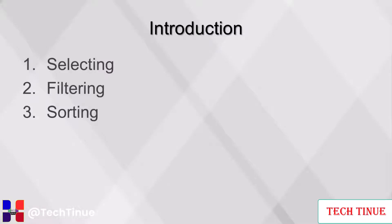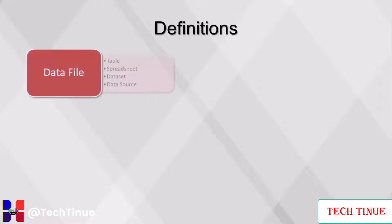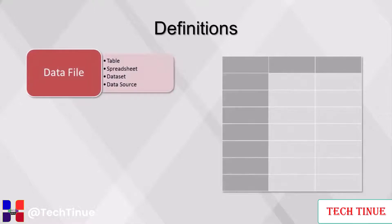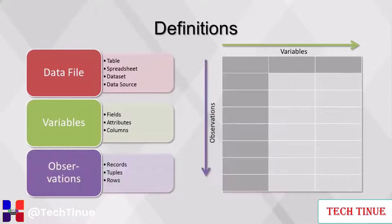This video will cover some of the foundations of business analytics — selecting, filtering, and sorting. There are many synonymous terms to describe the aspects of a typical data file, which can be referred to as a table, spreadsheet, data set, or data source. Along the horizontal axis are the variables, which can also be called fields, attributes, or columns. Along the vertical axis are the observations, also referred to as records, tuples, or rows.